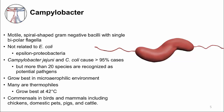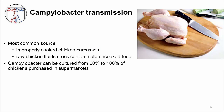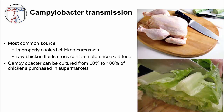Campylobacter are commensals in birds like chickens and other animals, making these zoonotic infections. The most common source is chicken feces contaminating raw chicken — a typical scenario is cross-contamination from cutting raw chicken on the same cutting board used to prepare a salad. In the supermarket, 60 to 100% of chickens are contaminated with Campylobacter, so transmission is high if you are not careful.